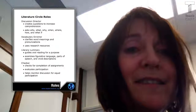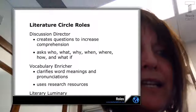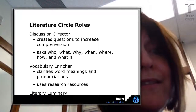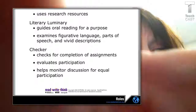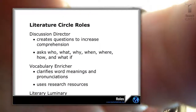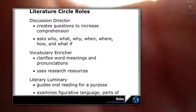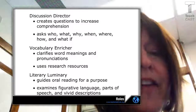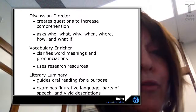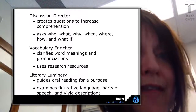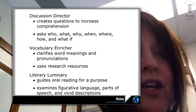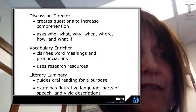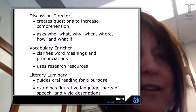Literature circles have different roles, and that gives every student responsibility and helps move the discussion along. Here are some sample roles brought to you by Read, Write, and Think: the discussion director, vocabulary enricher, literary luminary, and checker. I'm going to touch on the vocabulary enricher because that ties in with the word walls we talked about last week. You can add the vocabulary that students find — the interesting words — to a collective word wall, their own word collectors, or into their reader's response notebook, to help expand their vocabulary.